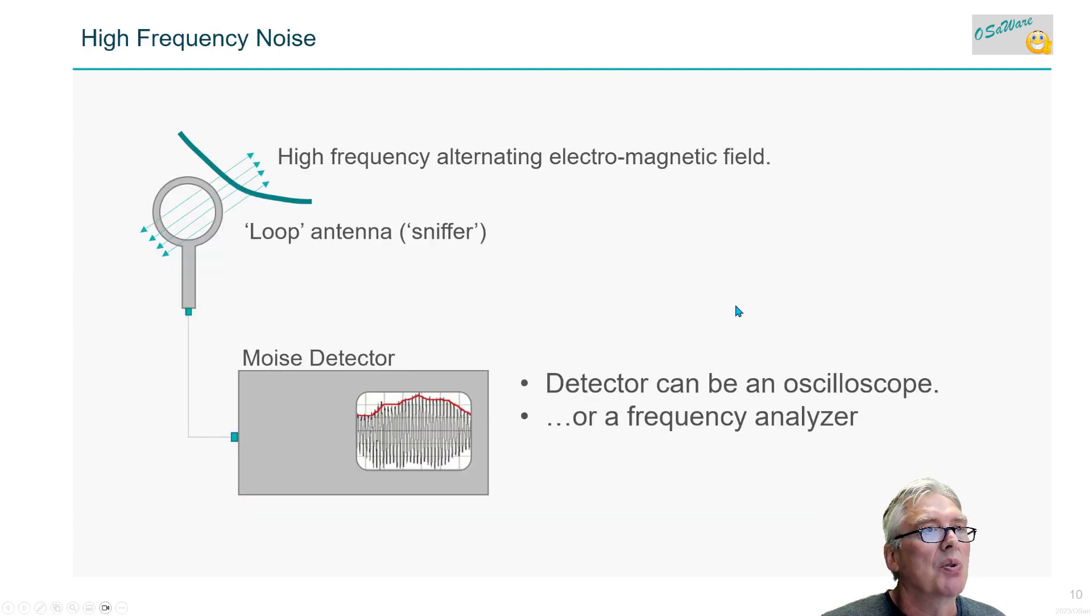Then there's high frequency noise. How to locate electromagnetic noise? We can use an antenna and detect this electromagnetic noise. Maybe here's a shield or broken shield - you can see high frequency oscillating through the shield or cable. Use a loop antenna and then have a noise detector - for instance, a spectrum analyzer. Here is an amplitude for a frequency - high frequency noise that might be causing the problem. You can use a frequency analyzer or oscilloscope to detect this.